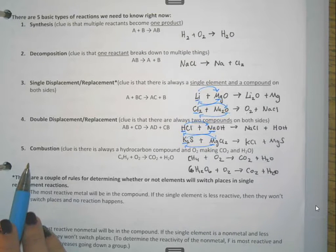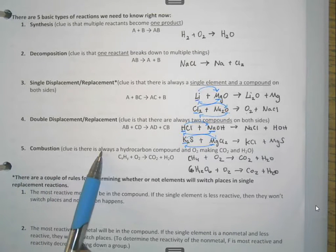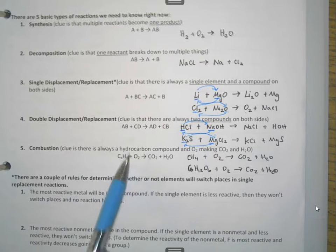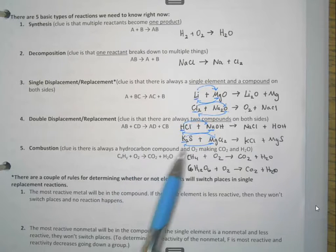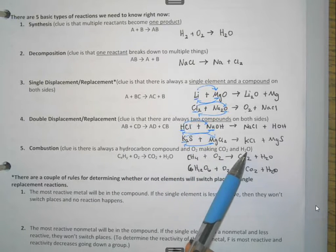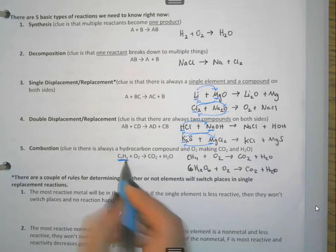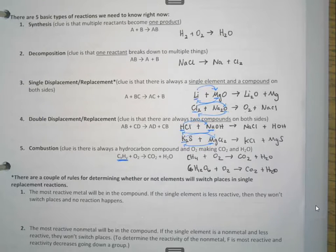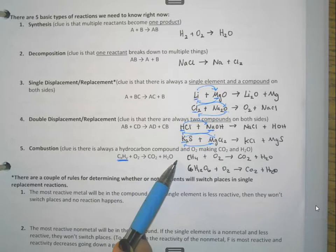The last type of reaction that we have is combustion. And combustion, I told you the clue, is that there's always a hydrocarbon. Hydrocarbon means something with hydrogen and something with carbon. And it also has oxygen going in. It makes carbon dioxide and water. Now, this one is really scripted for you. This right here that's underlined, the hydrocarbon is the only thing that can change. It always has to be oxygen making carbon dioxide and water.